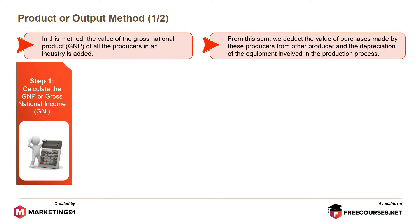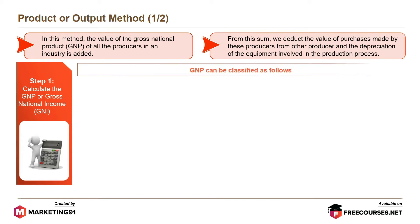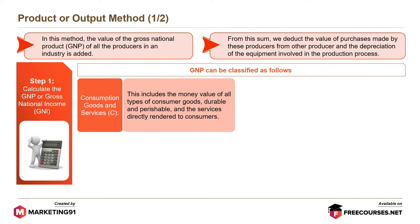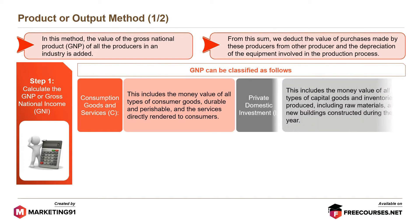Step 1 is to calculate the GNP or gross national income or GNI. GNP can be classified as follows: Consumption goods and services (C), which includes the money value of all types of consumer goods, durable and perishable, and the services directly rendered to consumers. Private domestic investment (I), which includes the money value of all types of capital goods and inventories produced, including raw materials and new buildings constructed during the year.